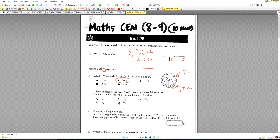Question number three. Which of these is equivalent to the fraction of cake left over once Bashar has taken his share? So Bashar has eaten four pieces. So we have six pieces left out of 10. Now it says which one is equivalent? That particular answer here is not available, so we need to cancel it down. We divide by the highest common factor of both numbers. The highest common factor of 6 and 10 is 2. So 6 divided by 2 is 3, 10 divided by 2 is 5, and all of a sudden our answer becomes visible.